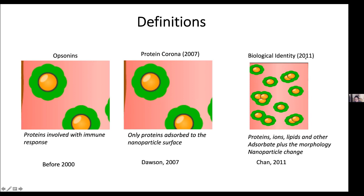In 2011, we decided to call this the biological identity, because we speculated that not only proteins but also ions, lipids, and other adsorbates can absorb to the surface. In addition, the nanoparticle may exist as a multifaceted structure—dimers and trimers—so the morphology also changes. These activities of different molecules absorbing to the surface as well as morphological changes cannot be explained just by using the term protein corona. As time goes on, the term continues to evolve.